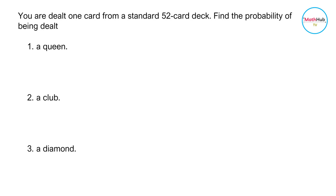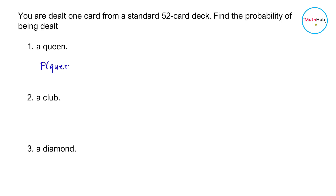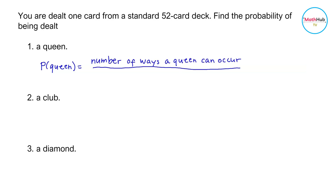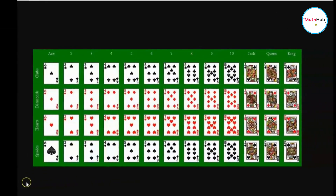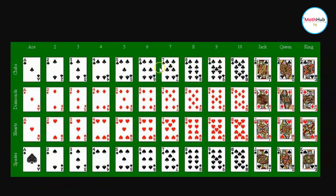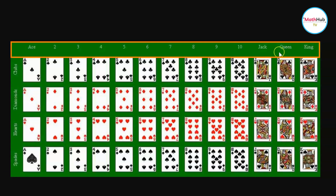You are dealt one card from a standard 52 card deck. Find the probability of being dealt a queen, a club, and a diamond. The probability of being dealt a queen is equal to the number of ways a queen can occur divided by the total number of possibilities. A 52 card deck has 52 cards and four different suits: spades, hearts, diamonds, and clubs. Each suit has a king, queen, jack, 10, 9, 8, 7, 6, 5, 4, 3, 2, and ace.